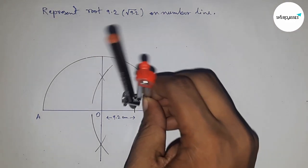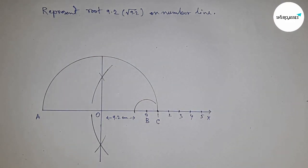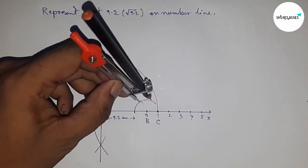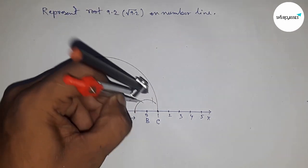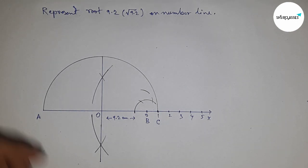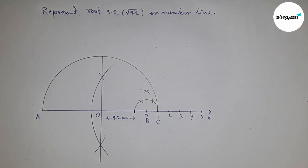Construct a 90 degree angle on point B using compass. If you don't know how to construct a 90 degree angle, please watch my video on my channel.